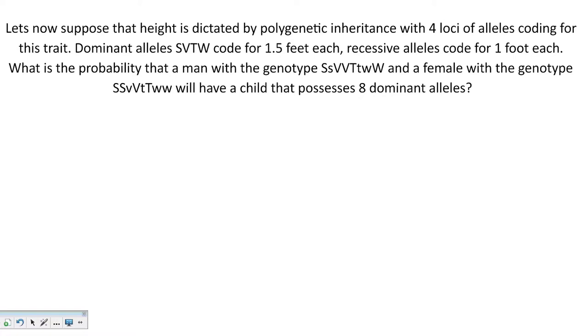We wanted to figure out a child that would possess eight dominant alleles. So we know the parent genotype, and the genotype that we want is all capital letters. We want to know the probability that this will happen.